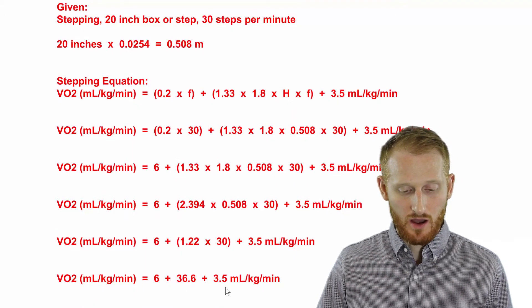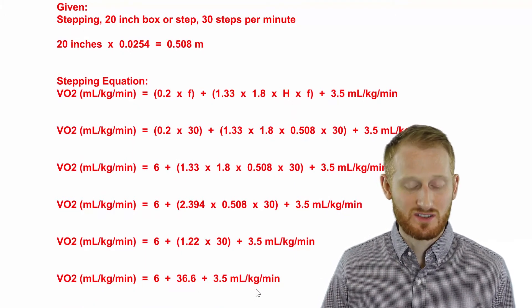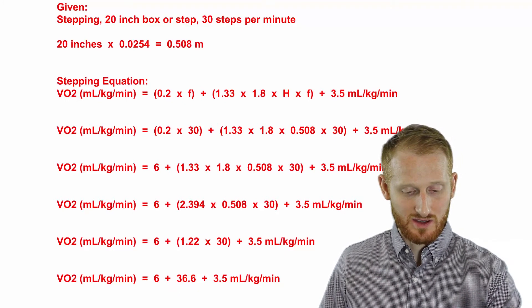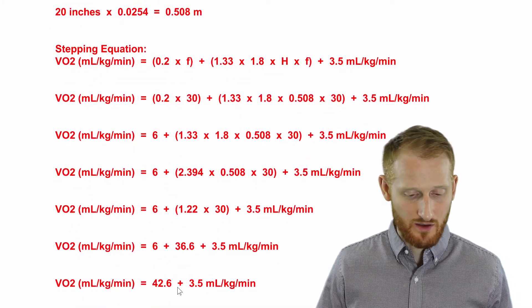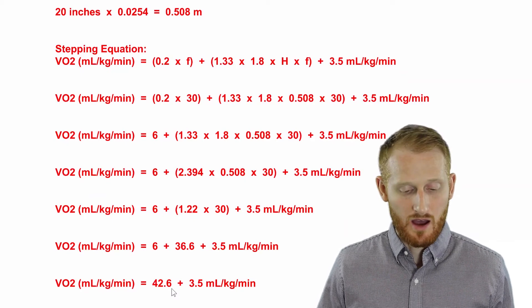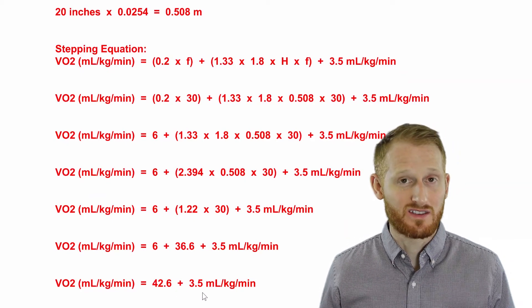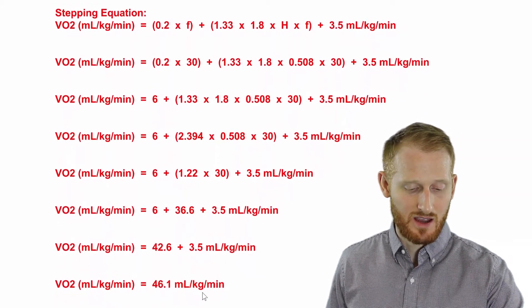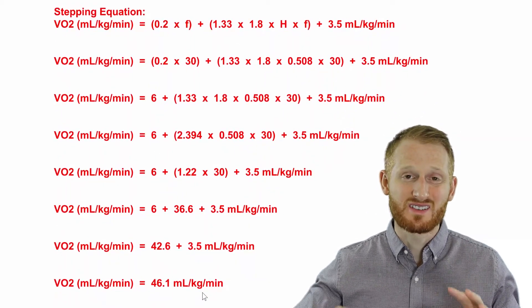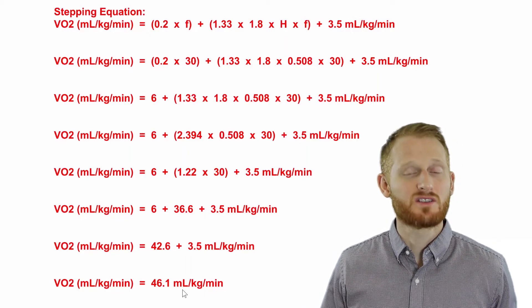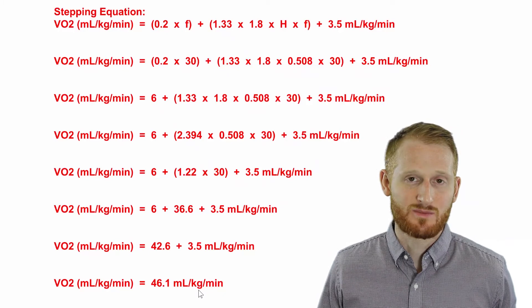So now we have just a few additions to do here. So first I'm going to do 6 plus 36.6, and that gives us 42.6. One more time, 42.6 plus the 3.5, that's the resting component of all this, gives us an oxygen consumption for the stepping that he's doing of 46.1 milliliters of oxygen per kilogram of body mass per minute.